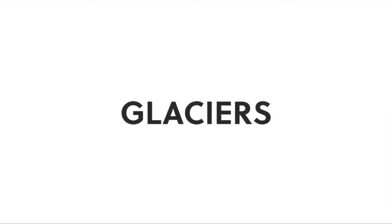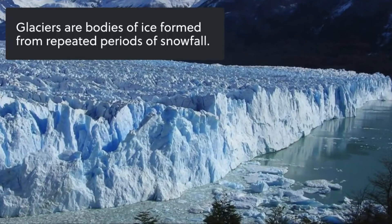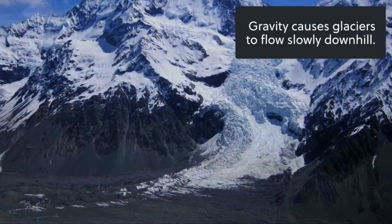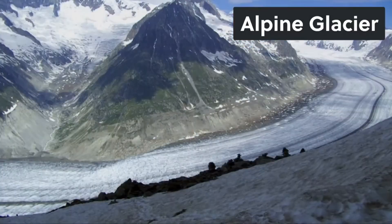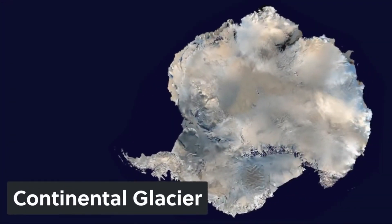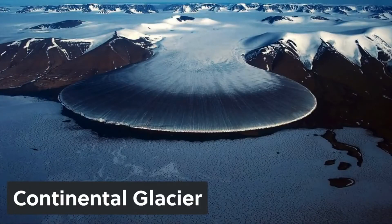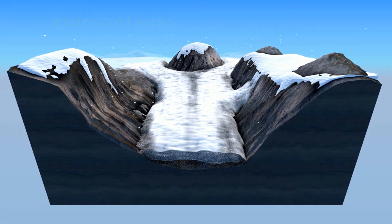Glaciers are bodies of ice formed from repeated periods of snowfall. Due to gravity, glaciers are forced to move slowly down the hill. There are different types of glaciers: the alpine glacier, which is formed in mountain areas, and the continental glacier — a massive glacier that moves outward from the center, occupying a large area, for example in Antarctica and Greenland.